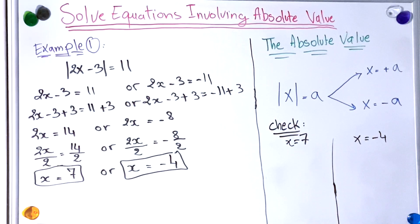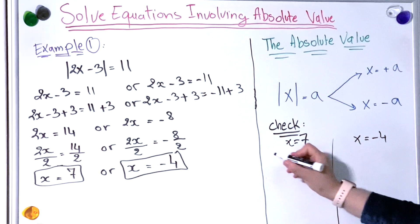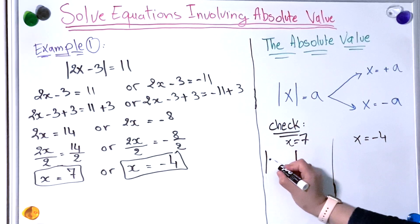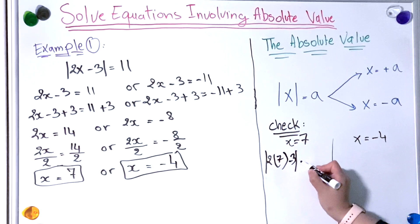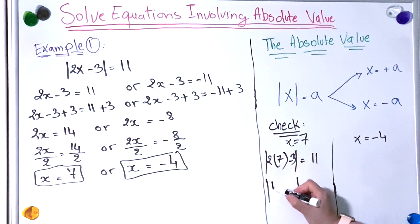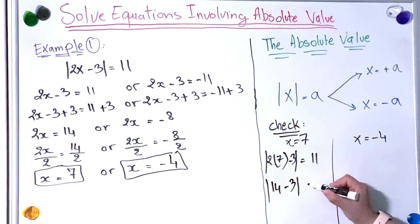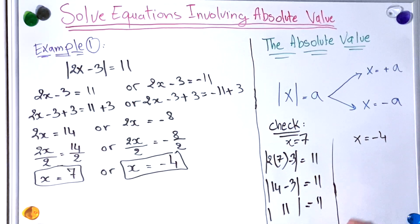Now let's check our solution to see if it's true. We'll start with x equal to 7. So we have the absolute value of 2 multiplied by 7, minus 3, equal to 11. The absolute value of 14 minus 3 equals the absolute value of 11, which equals 11. That is true.